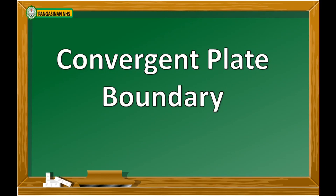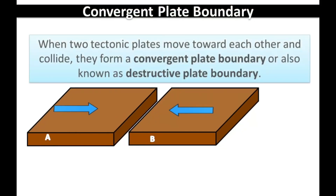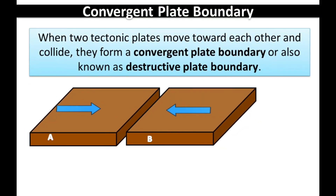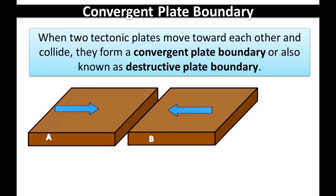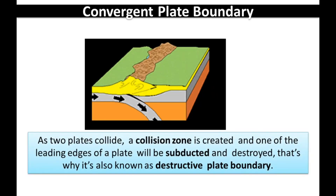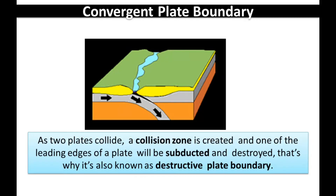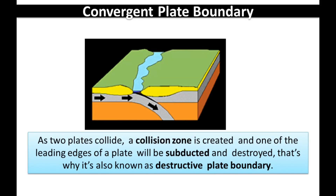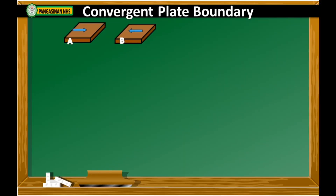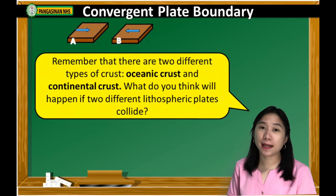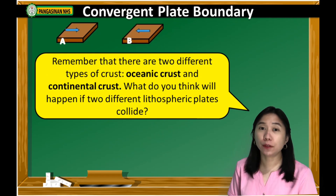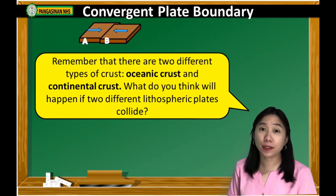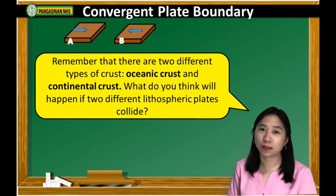Convergent plate boundary: When two tectonic plates move towards each other and collide, they form a convergent plate boundary, also known as a destructive plate boundary. As two plates collide, a collision zone is created and one of the leading edges of a plate will be subducted and destroyed — that's why it's also known as a destructive plate boundary. There are two different types of crusts: oceanic crust and continental crust. What happens when two different lithospheric plates collide will be discussed further in our next video lesson.